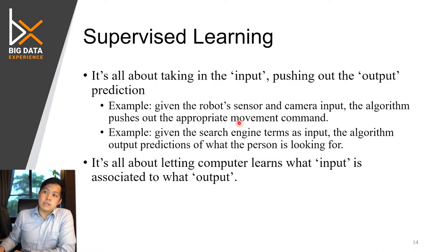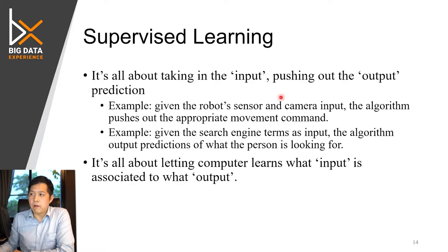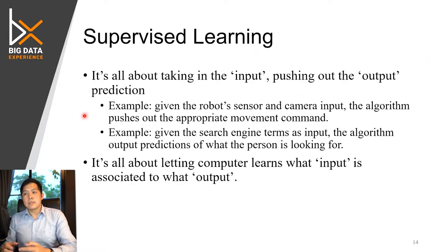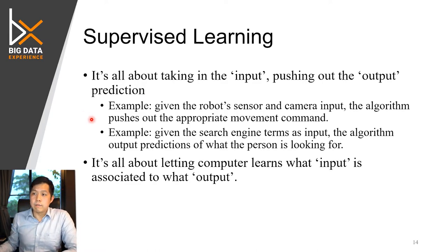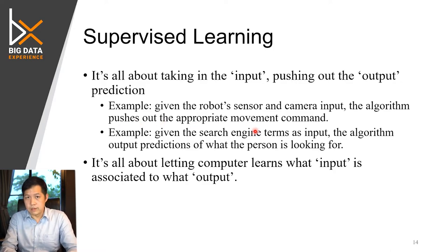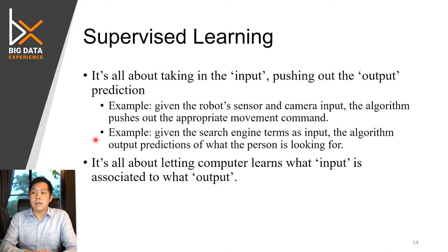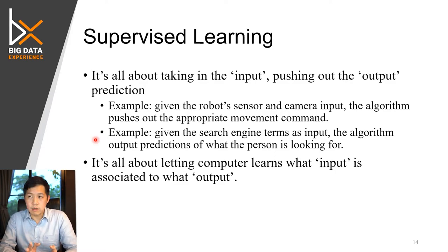For supervised learning, you must have input paired with output, and then you try to make the system learn from those pairs. For example, given robot sensor and camera input, you let it find the appropriate movement — like how to drive in a self-driving car. Or given search terms, the algorithm predicts what types of data to look for. Supervised learning is all about learning a mapping between input and output.